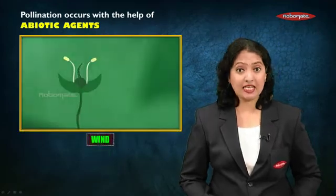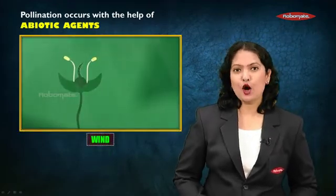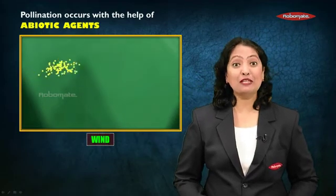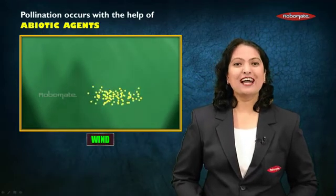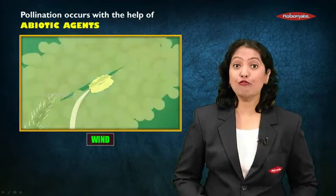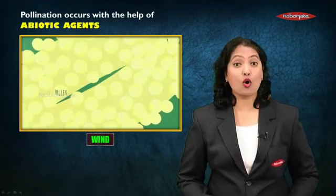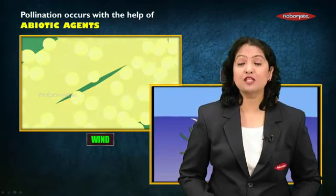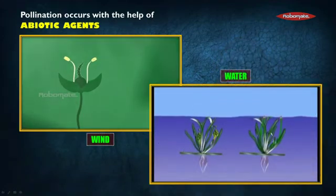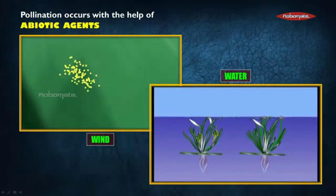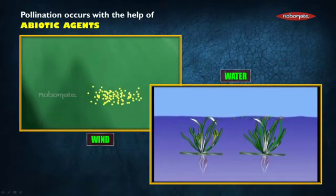Pollination sometimes occurs with the help of abiotic agents like wind. If pollination takes place with the help of wind, it is called as anemophily. Wind acts as an agent of cross-pollination. Not only wind, but also water helps to transfer the pollen grains from anthers to stigma in aquatic plants, and such pollination is called as hydrophily.